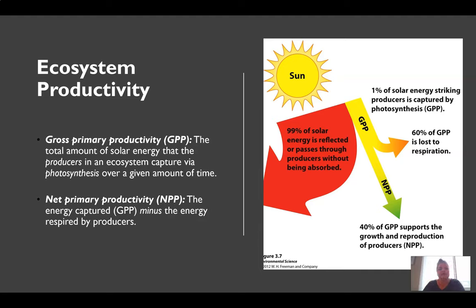Looking at ecosystem productivity, we have two different components: gross primary production or GPP and net primary production or NPP. The GPP is the total amount of energy that a producer in an ecosystem captures via photosynthesis over a given amount of time. A lot of this is lost to respiration, about 60 percent, and 40 percent is actually absorbed by the producers. Net primary production is the energy captured minus the energy respired by producers. This 40 percent supports the growth and production of the producers.